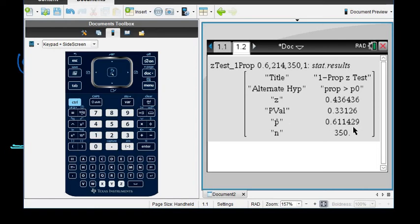And notice it gives us P hat. P hat, like I said, is rounded to 0.614429. I left it as a fraction when I plugged it in.